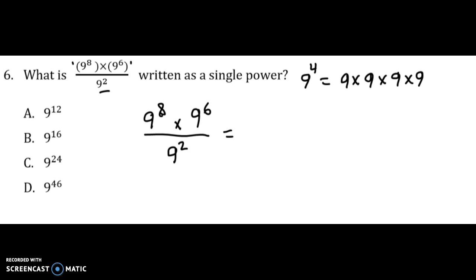So what we've got up top is a total of 9 to the 14, so it would be 14 nines being multiplied all together. And in the bottom we've got just 2 nines there.